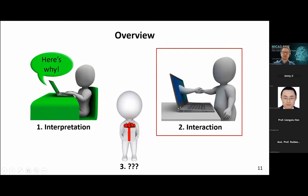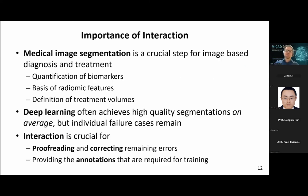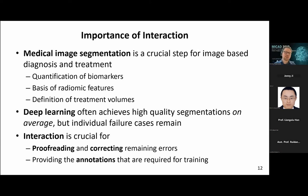Now we move on to the second topic: interaction. I'm mostly going to discuss interaction in the context of medical image segmentation, which is a crucial step for image-based diagnosis and treatment. Once you have segmented something, you can quantify it in terms of volume, compute radiomic features, or define radiation treatment volumes — and in those applications it's highly relevant that segmentation should be accurate in each and every individual subject. Deep learning approaches can give high quality segmentations on average, but individual failure cases remain, and interaction can help find and eliminate them.